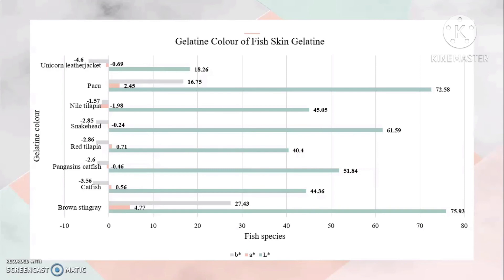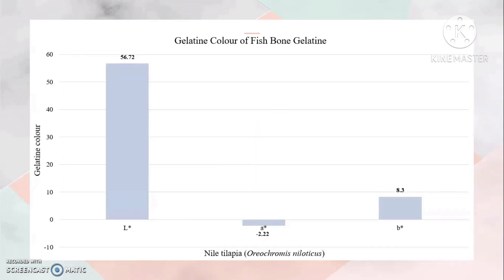The highest L value (lightness) for fish skin gelatin was obtained from brown stingray, indicating a bright color. In contrast, the gelatin from unicorn leatherjacket fish skin revealed the darkest color, shown by the lowest L value. The gelatin extracted from Nile Tilapia bone had a high lightness level.